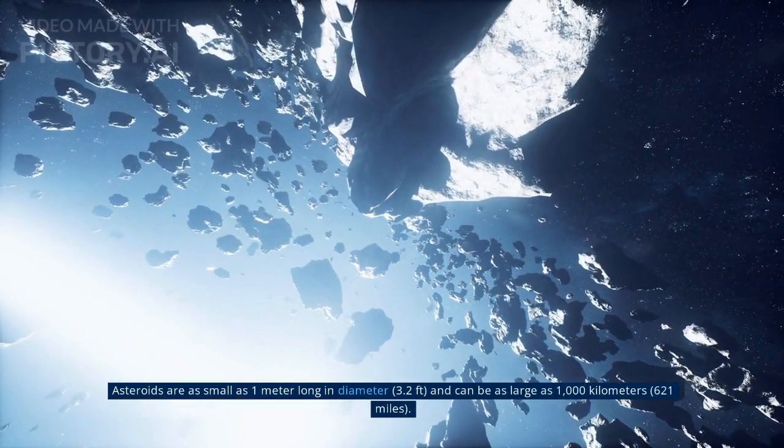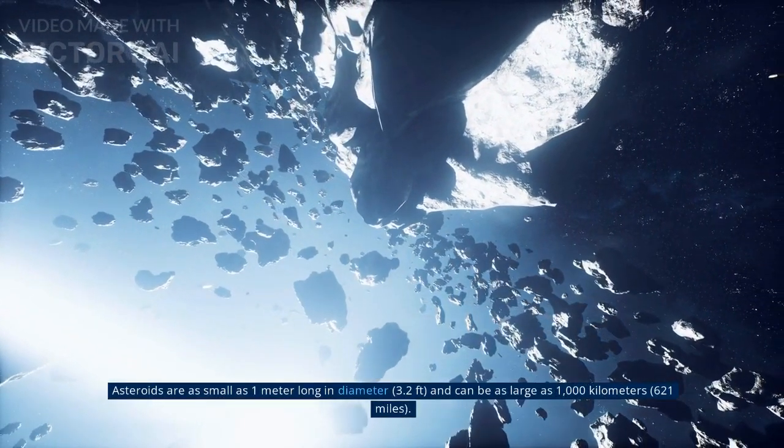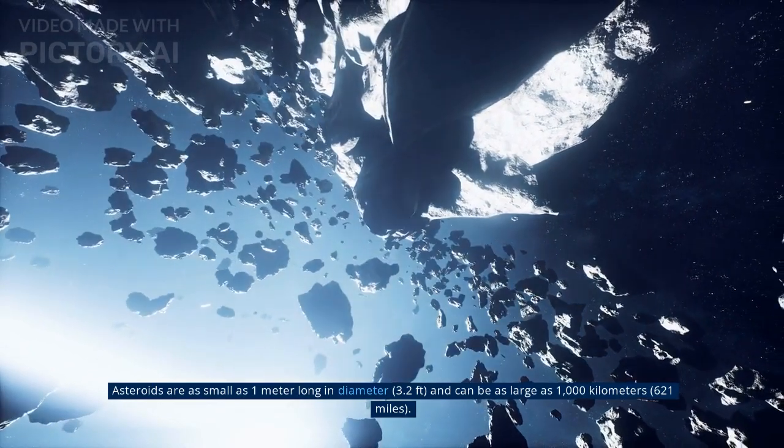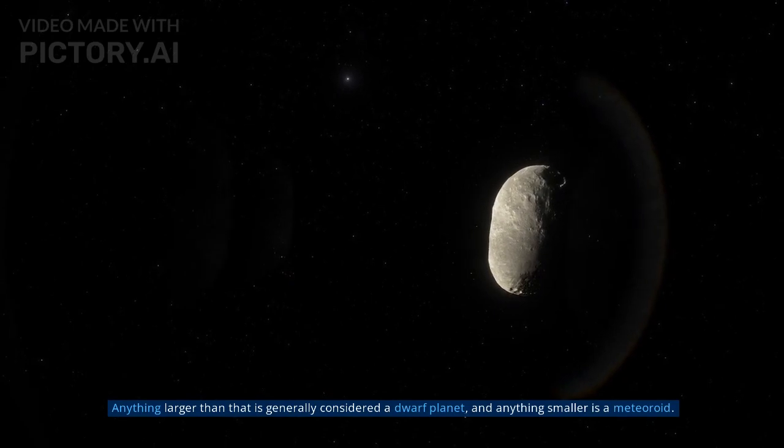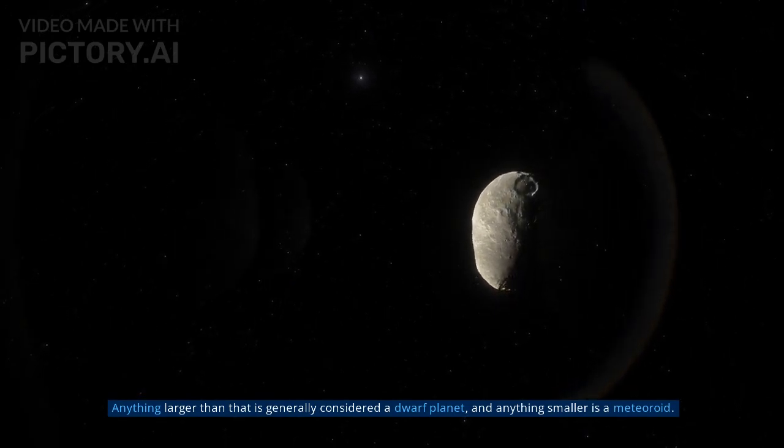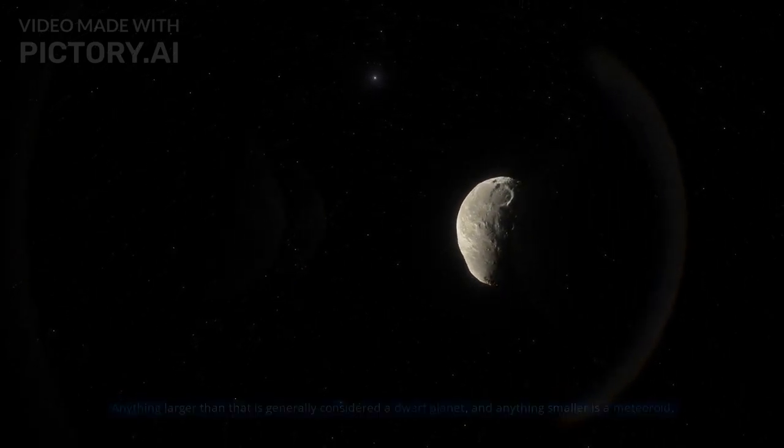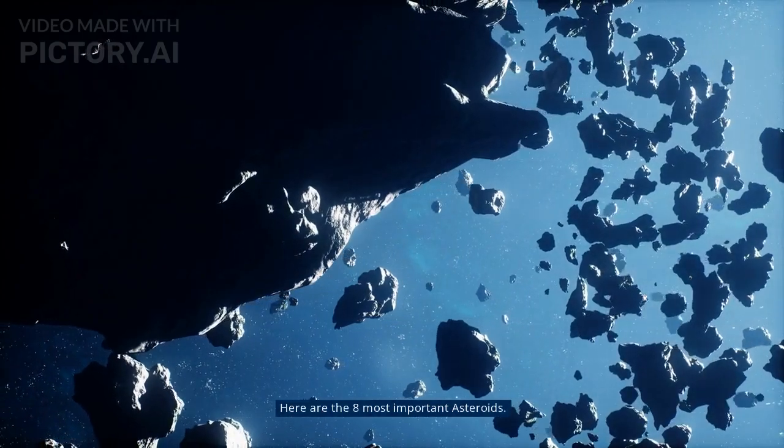Asteroids are as small as one meter in diameter (3.2 feet) and can be as large as 1,000 kilometers (621 miles). Anything larger than that is generally considered a dwarf planet, and anything smaller is a meteoroid. Here are the eight most important asteroids.